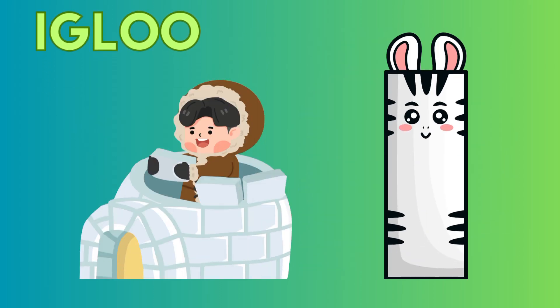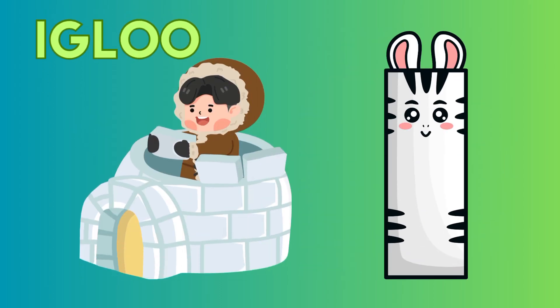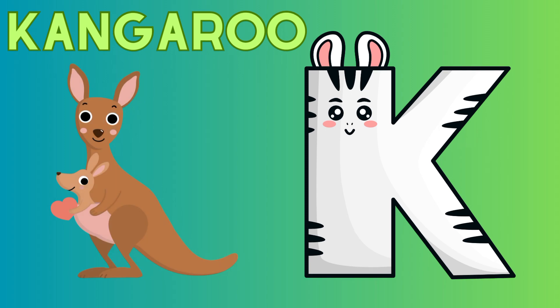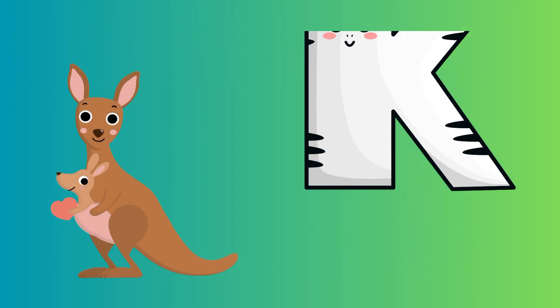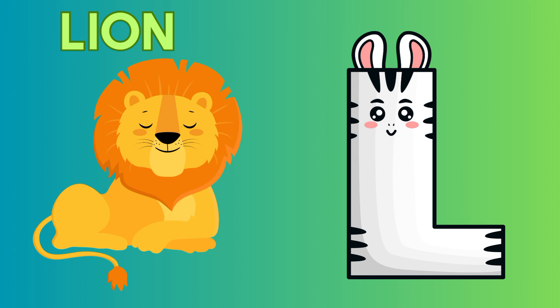I is for igloo, i-i-igloo. J is for jump, j-j-jump. K is for kangaroo, k-k-kangaroo. L is for lion, l-l-lion.